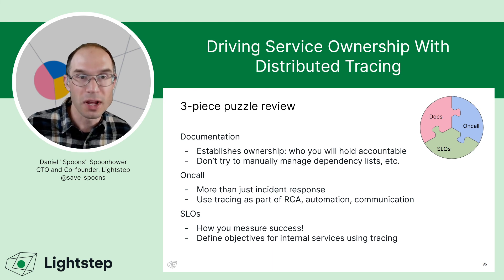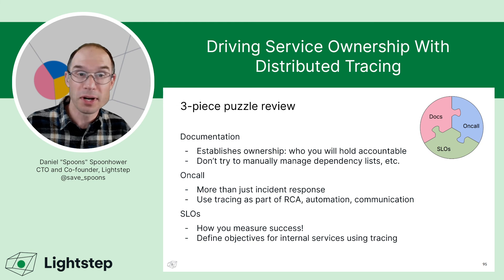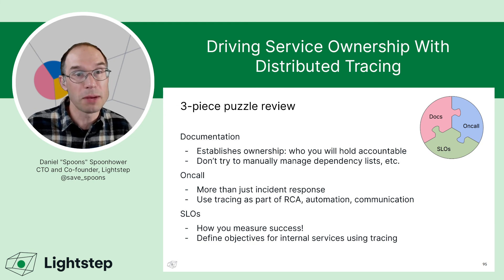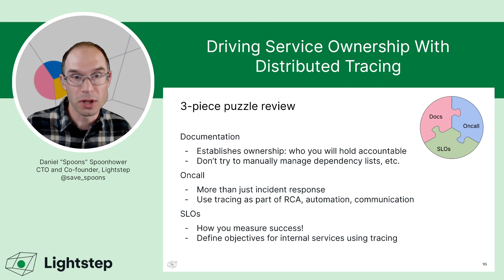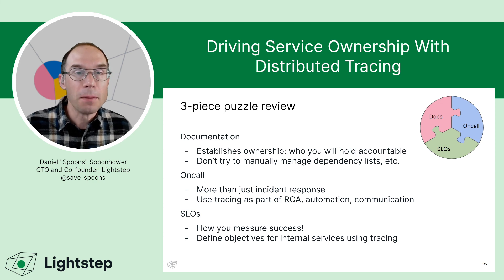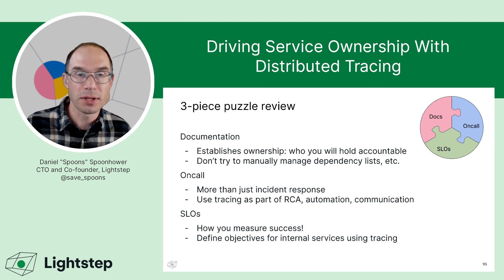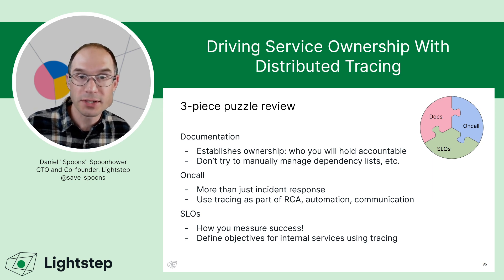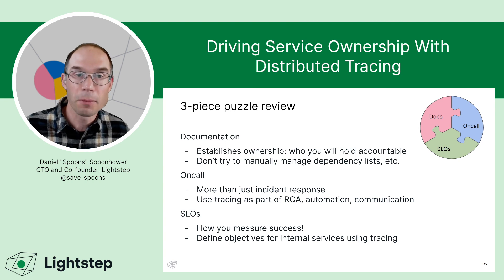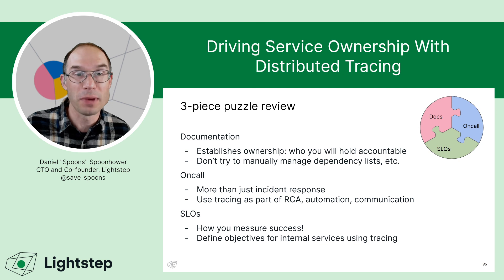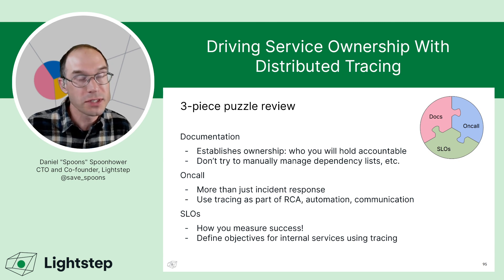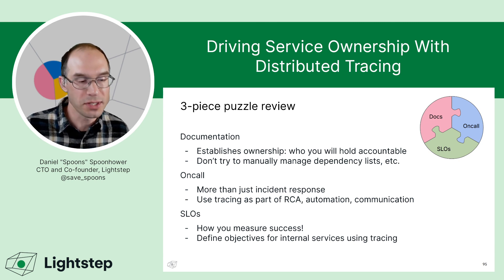To review: I've covered three important steps in building and maintaining service ownership. Documentation — while always valuable — is what establishes accountability and who you'll hold responsible. It's also critical for building the confidence of folks on those teams. But don't try to manage all documentation manually; things like dependencies really should come from the telemetry, from distributed traces, rather than being maintained manually by humans. On-call is obviously really important and an opportunity for developers to feel stressed — but also an opportunity for the organization to relieve that stress. Tracing is pervasive in on-call, from root cause analysis to automating how pages are delivered. And SLOs are how you measure success — defining objectives for internal services can be tricky without a tool like tracing to help.